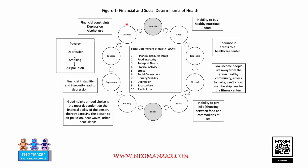This diagram shows the social determinants of health. As you can see, there are ten listed in the box. Financial insecurity or poverty really feeds into everything — food, inability to buy nutrition, food and transport, hindrance and access to care. Low income leads to issues with physical activity, exercise, parks, and so on.